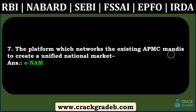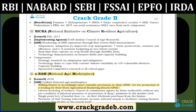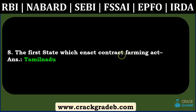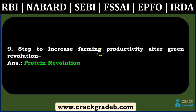The platform that networks existing APMC mandis to create a unified national market — eNAM — is always in the news and was covered in the agriculture schemes part. The question about the first state to enact the Contract Farming Act was from previous current affairs, around October of last year, so it was not covered in our study material. Regarding steps to increase farm productivity after the Green Revolution, some students say the answer is 'Protein Revolution' and some say 'Evergreen Revolution.'